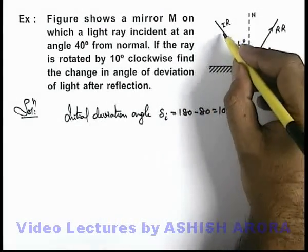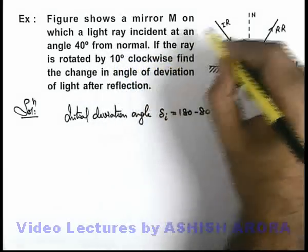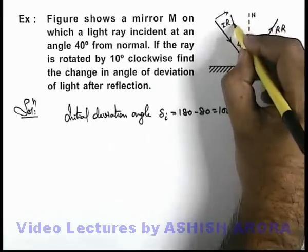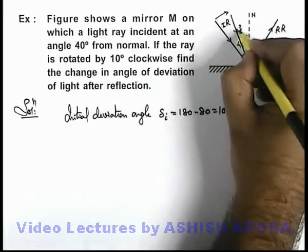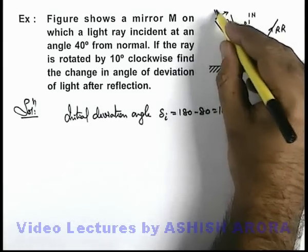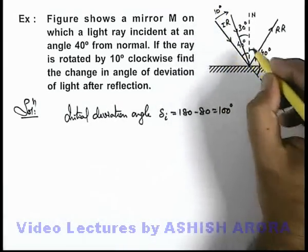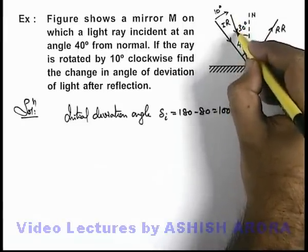Now if this incident ray is rotated by 10 degrees clockwise, finally the light ray is incident at this point at an angle of incidence 30 degrees because it is rotated by 10 degrees.